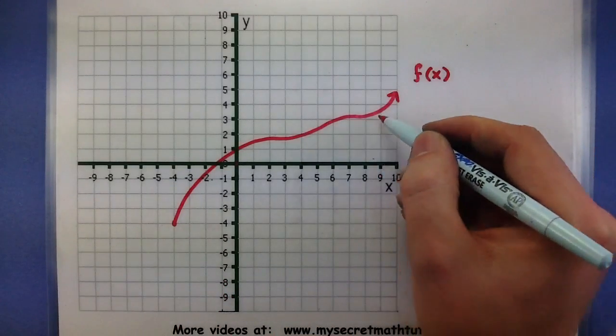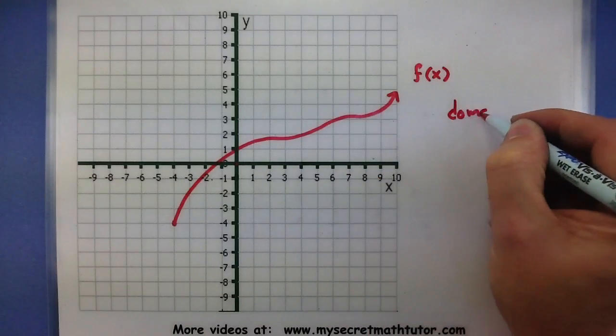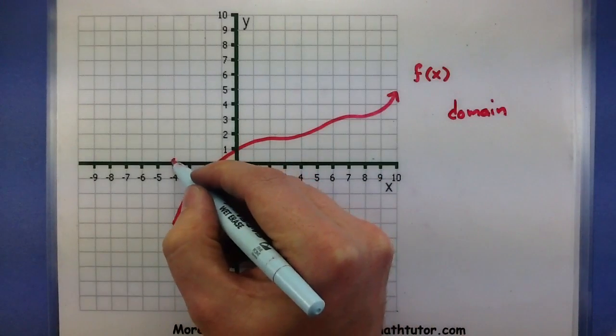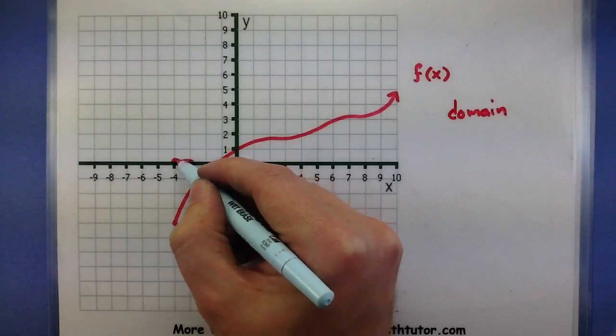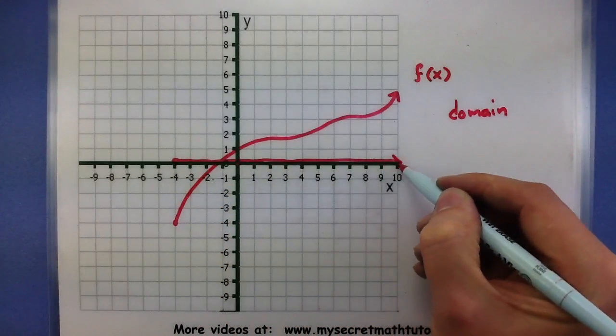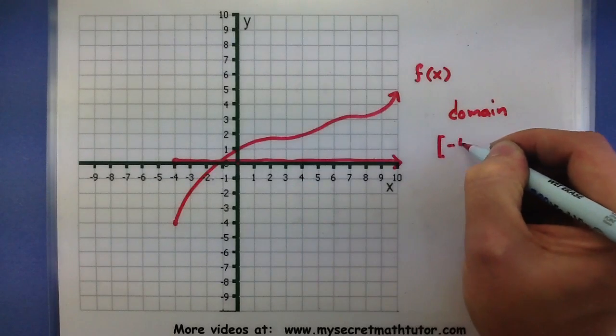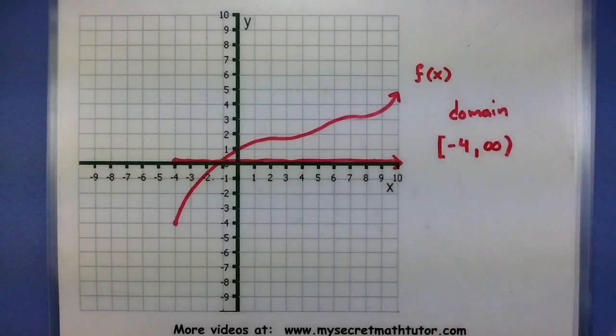So first, let's grab some points and bring them back to the x-axis and determine our domain. Let's see, so I'd start shading in everything from negative 4, it looks like. And since there's an arrow on the end, that guy would keep going. So my domain from negative 4 all the way to infinity.